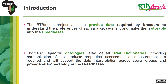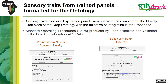As part of the introduction, the RTB Food Project aims to provide data required by breeders to understand the preferences of each market segment and make this data storable into breed bases. To achieve this, specific ontologies — what we are calling trait dictionaries — that provide harmonization of product properties, assessment, or measurements are required. These will support data interpretation across social groups and provide interoperability in the breed bases. Sensory traits measured by trained panels were extracted to complement the quality trait class of the crop ontology, with the objective of integrating it into breed base.